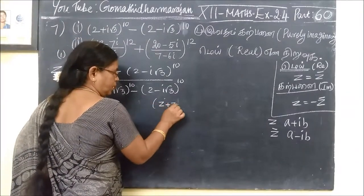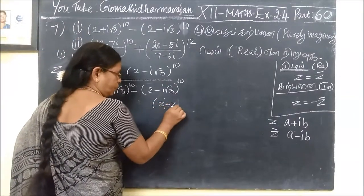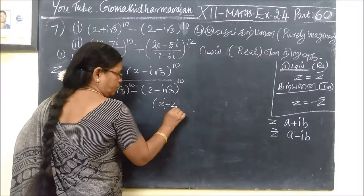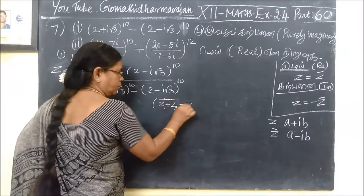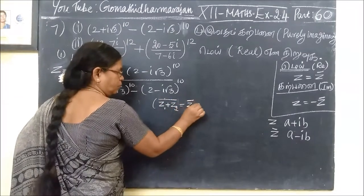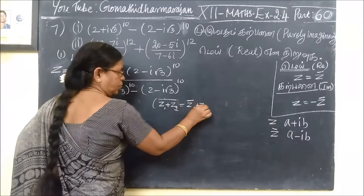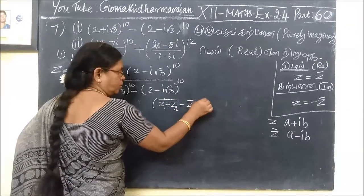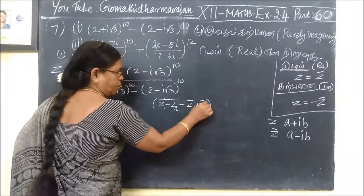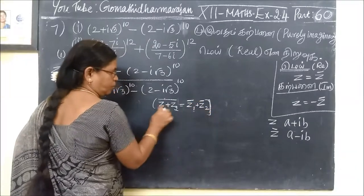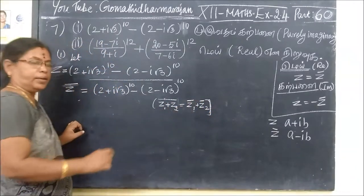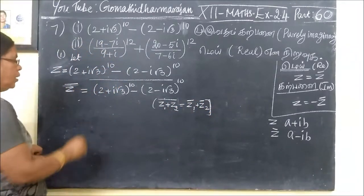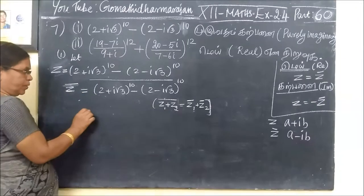Z1 plus Z2 equals Z1 bar. Z2 equals Z2 bar. We will use Z2 bar. All bar — I will be doing this three times.